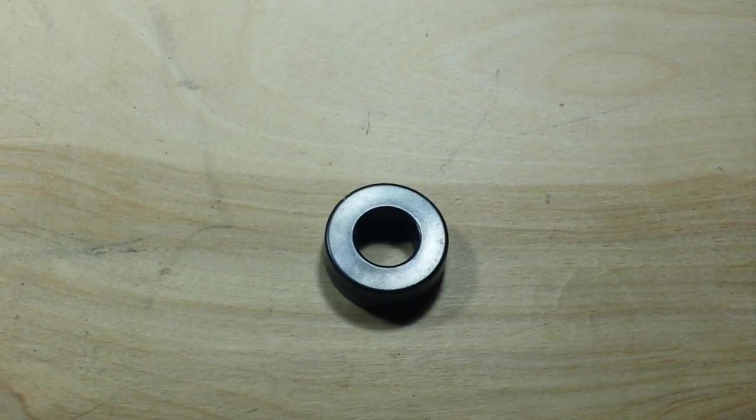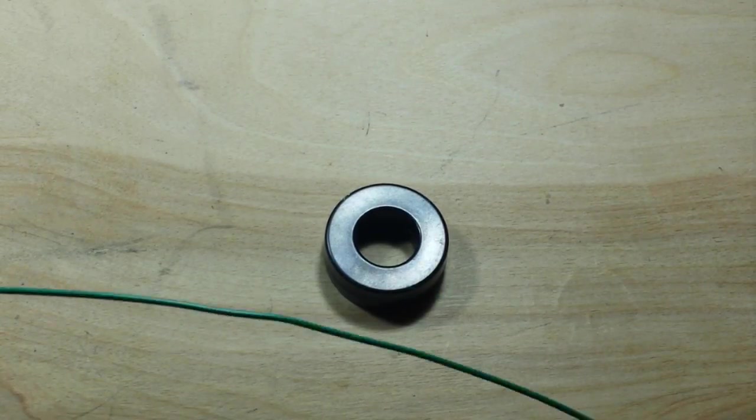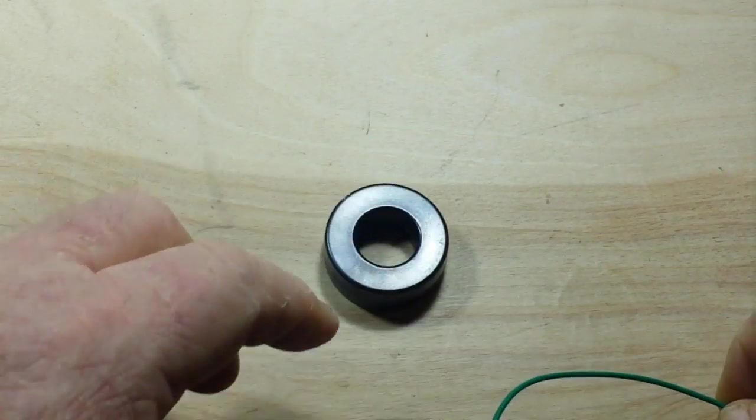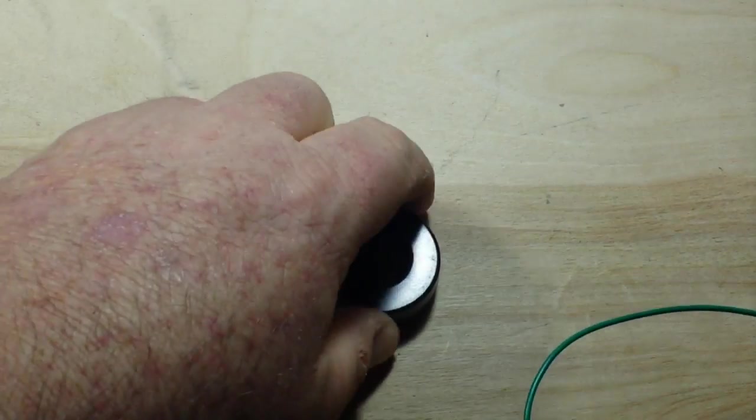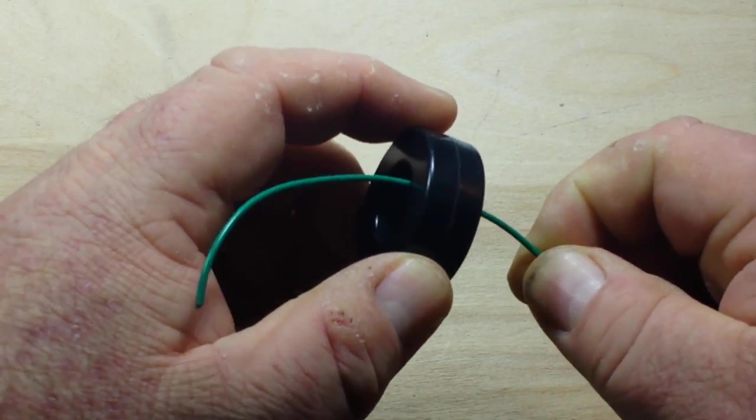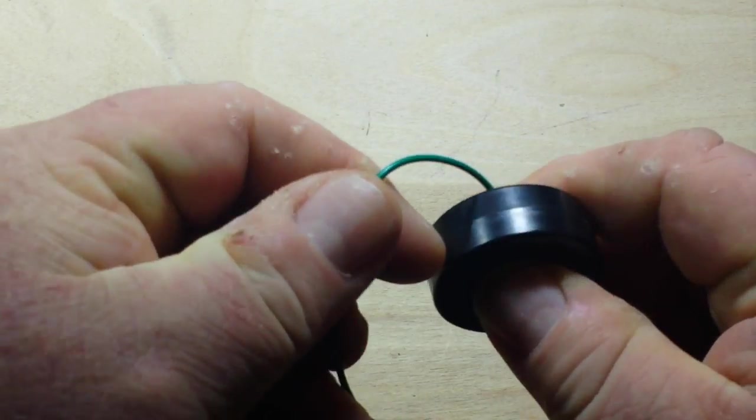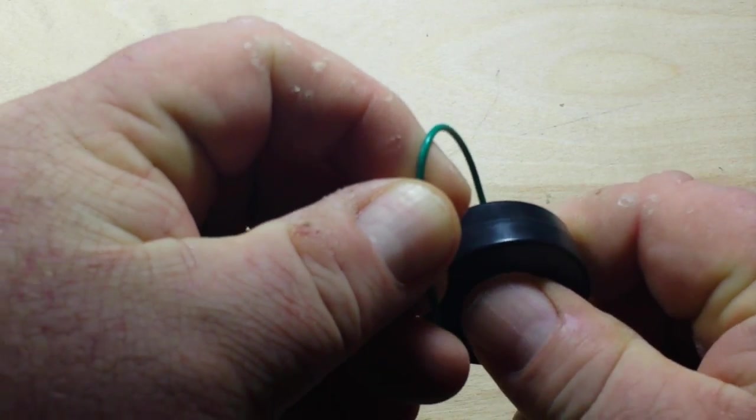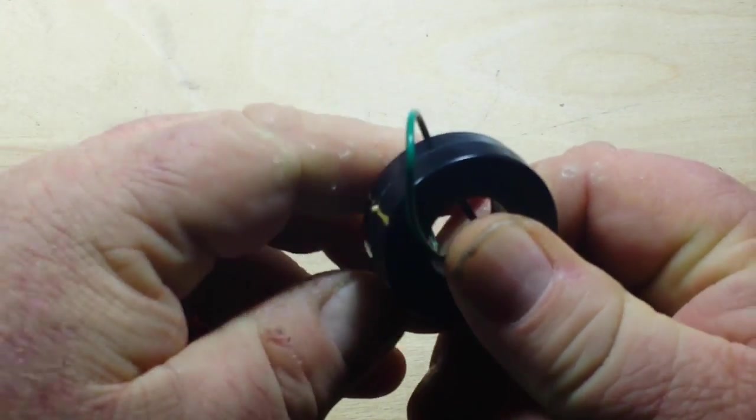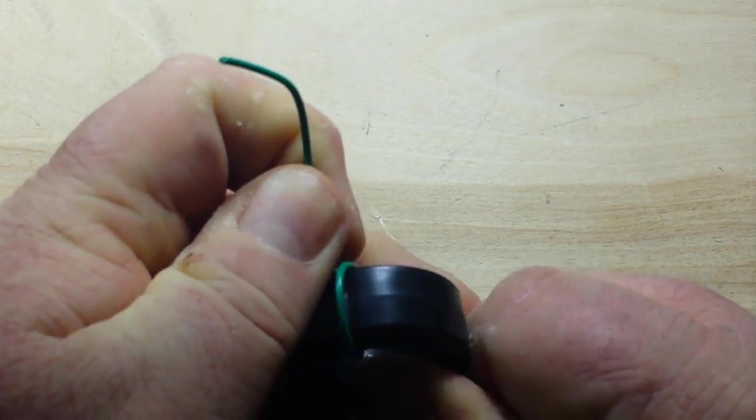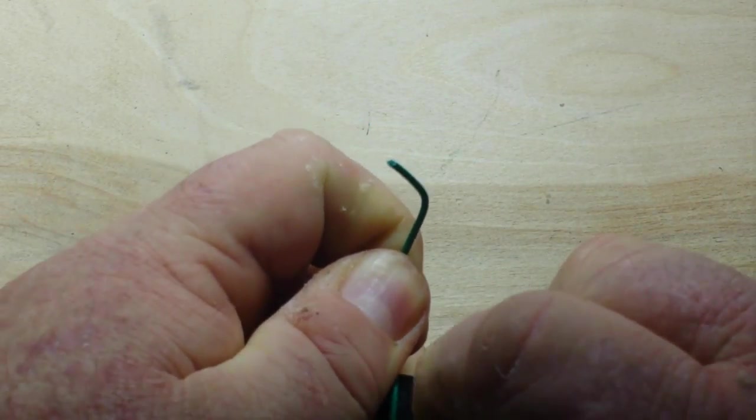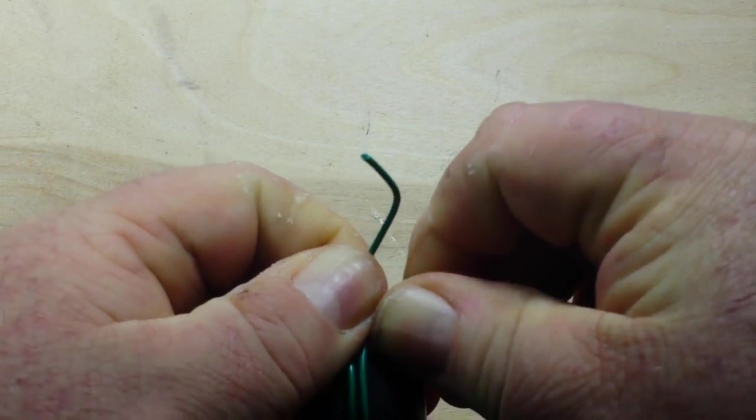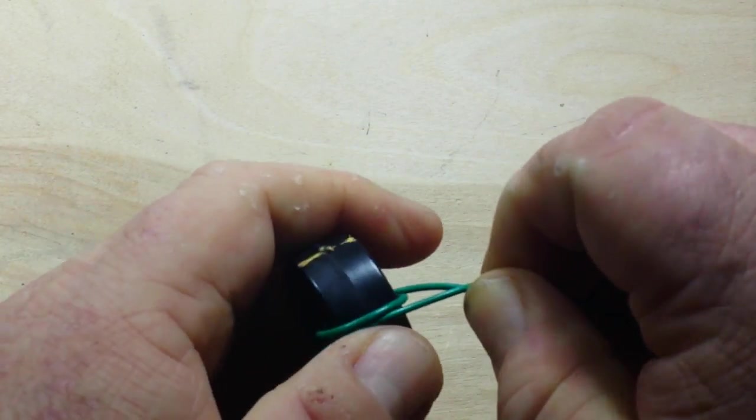But how do you figure out how much wire you need? Well, I'll show you a little trick. If you take your wire and feed it through your toroid, pull it taut as tight as you're going to wind your thing. That's how tight you want to pull it.